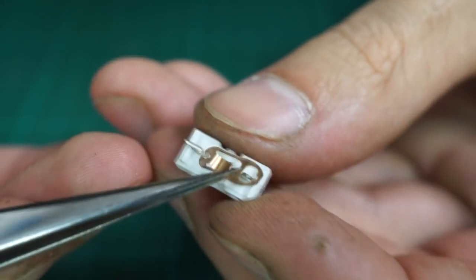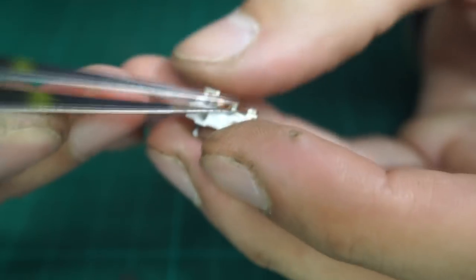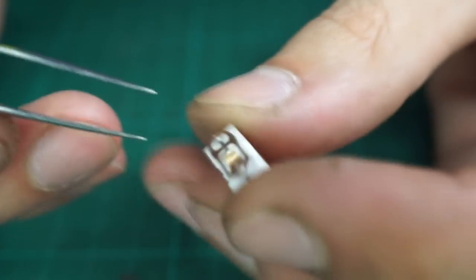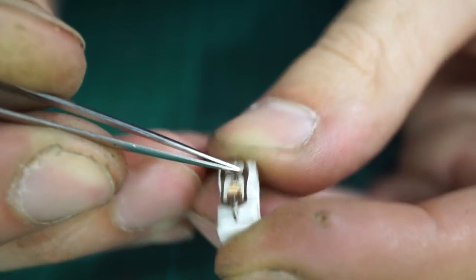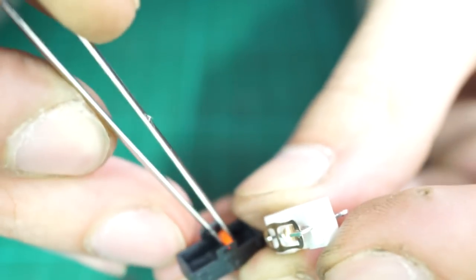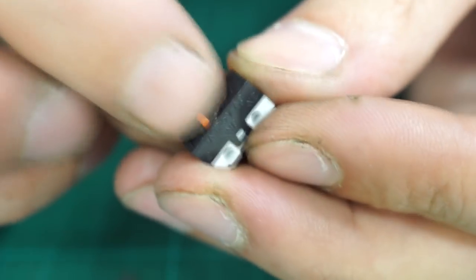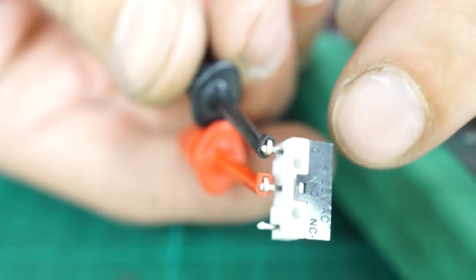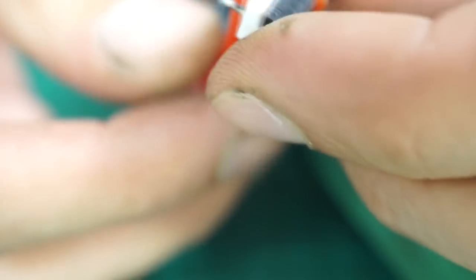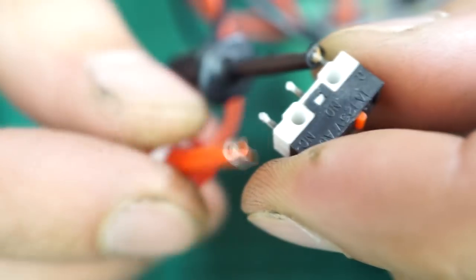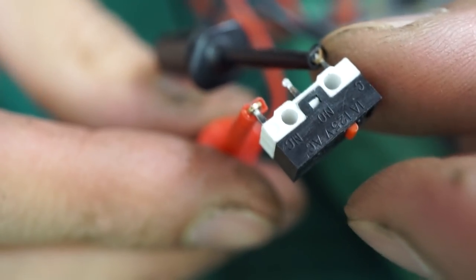Now just assemble the switch back together and make a test if it's switching good. That works, so I can put the cover back on. Now I connect the ohmmeter to the normal open contact and make a test. Great, I got clean contact on normal open. What about on normal close? Also good. The switch works like new and it's ready for the next few years of use.